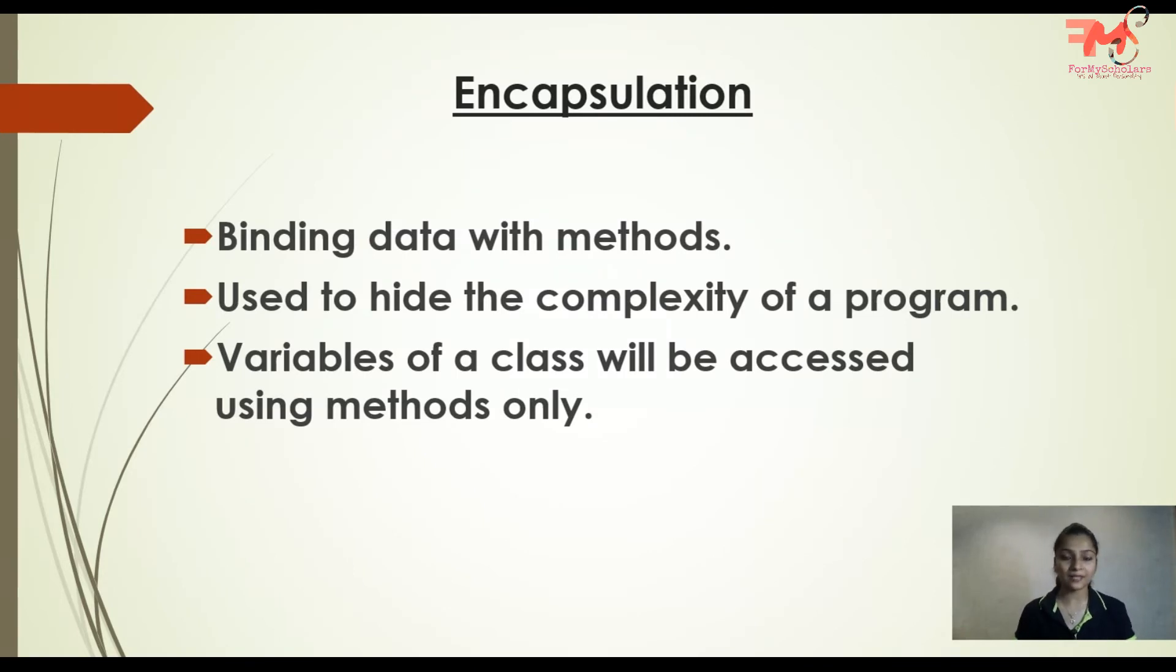The basic purpose of using this property is to hide the complexity of a program. It says if you are having some variables in a class, then those variables can be accessed using the methods only. You cannot access those variables directly. The better way is to access those variables via method, means you are binding data variables with methods. The advantage of using it is to protect the data from outside world. If you use private data, then obviously outside that class no other method or class can use that variable, but using public method you can access those variables.